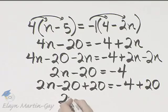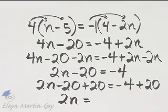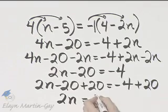On the left side, I have simply 2n then. On the right side, negative 4 plus 20, that is 16.